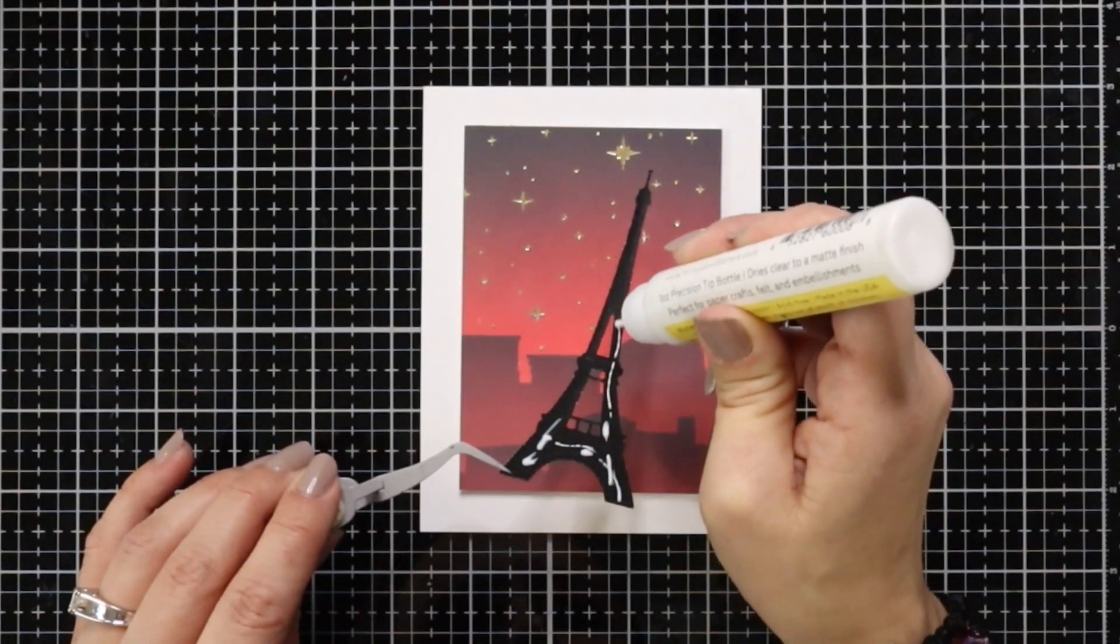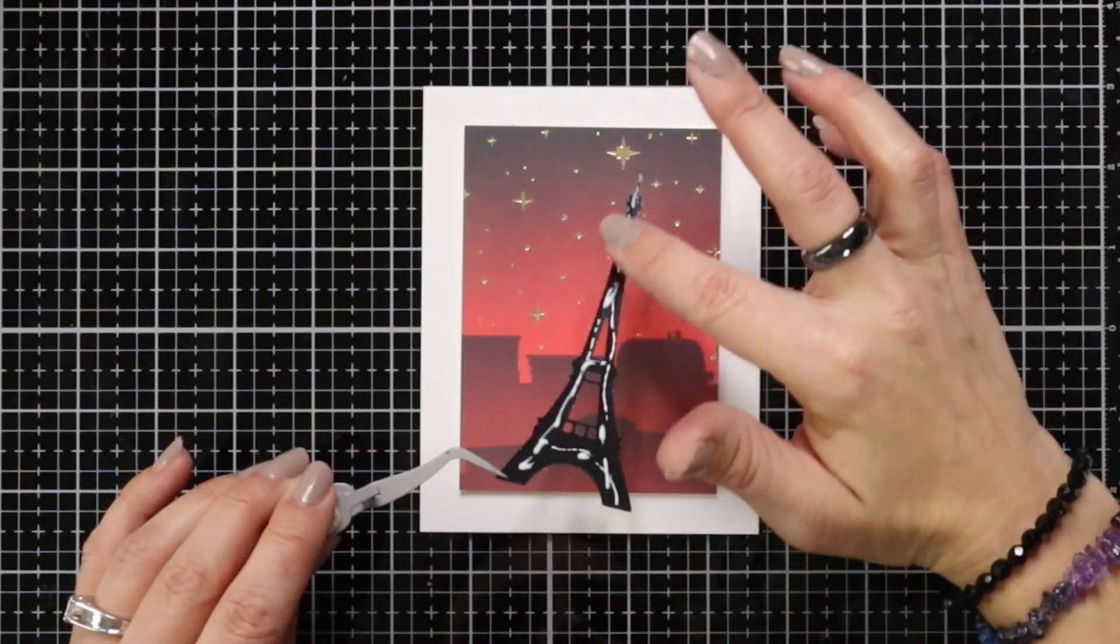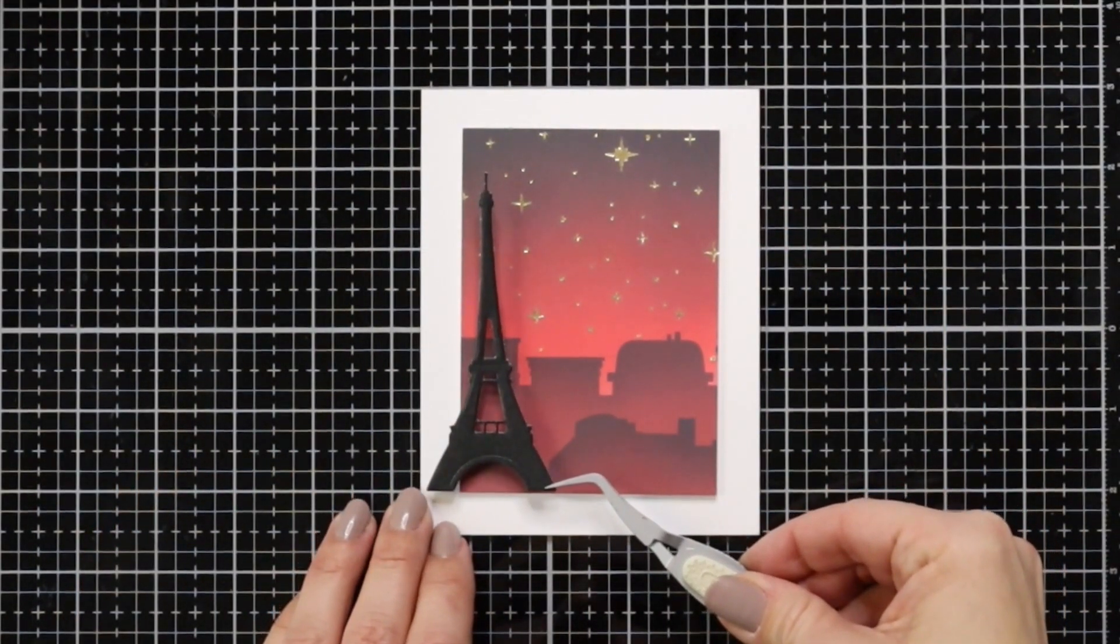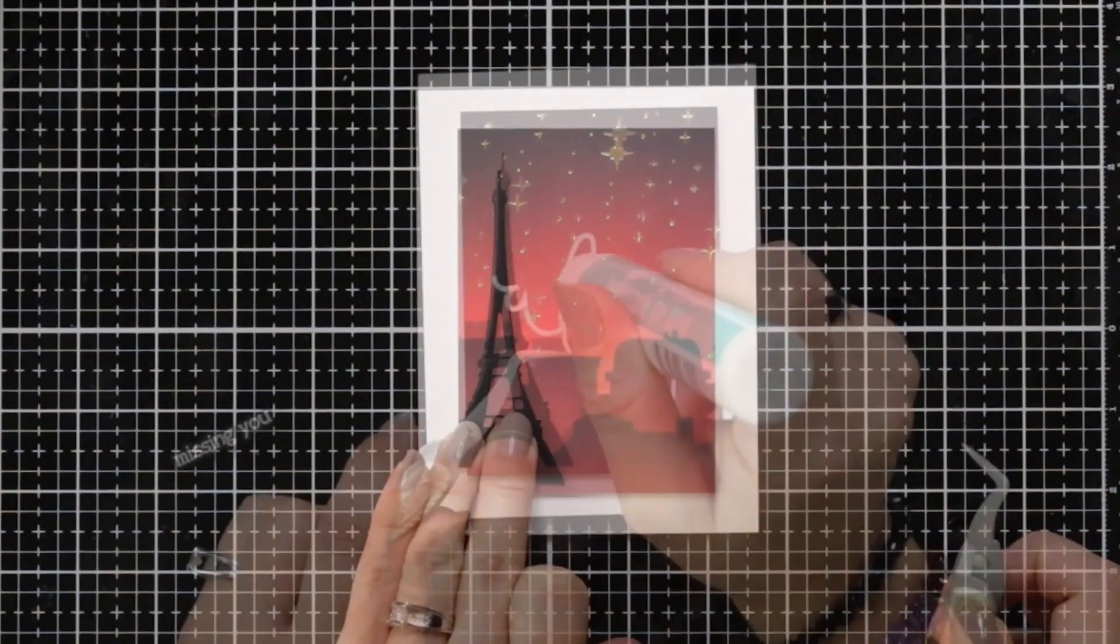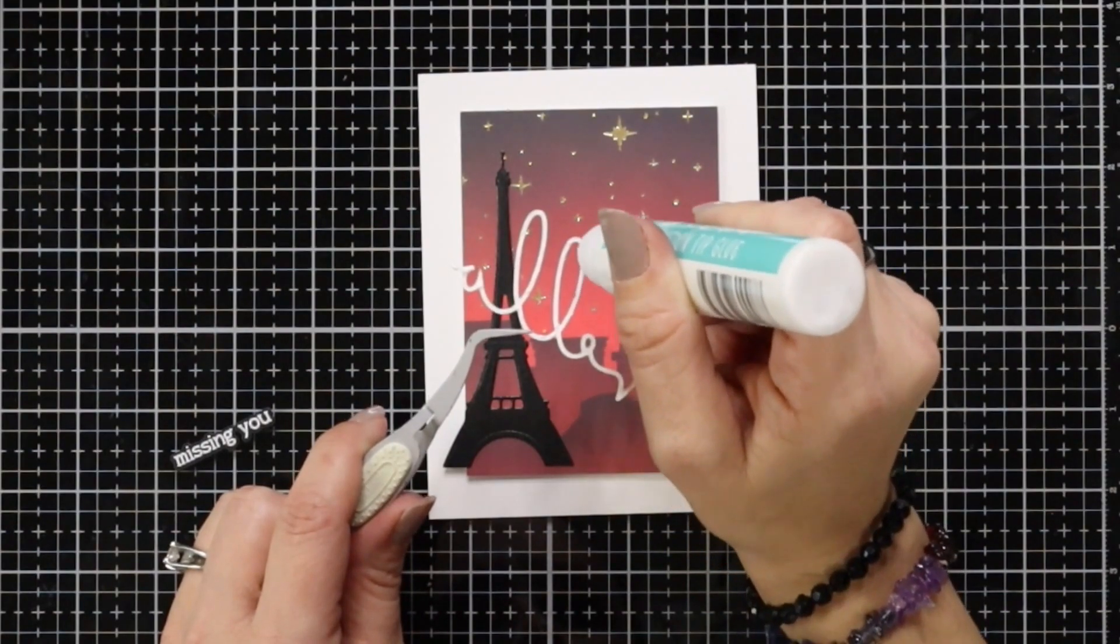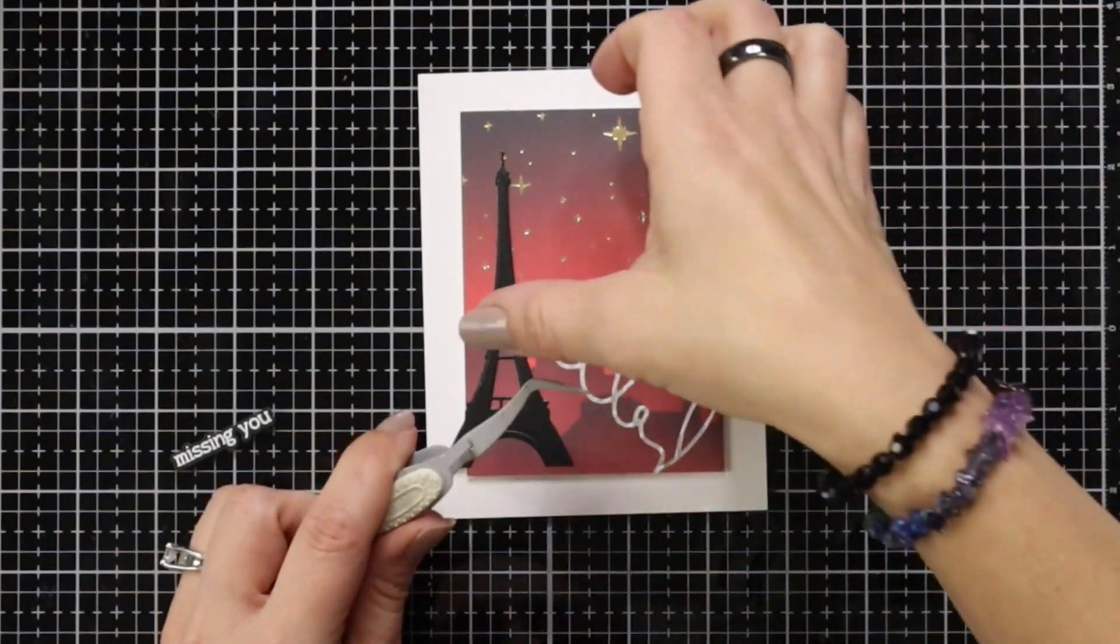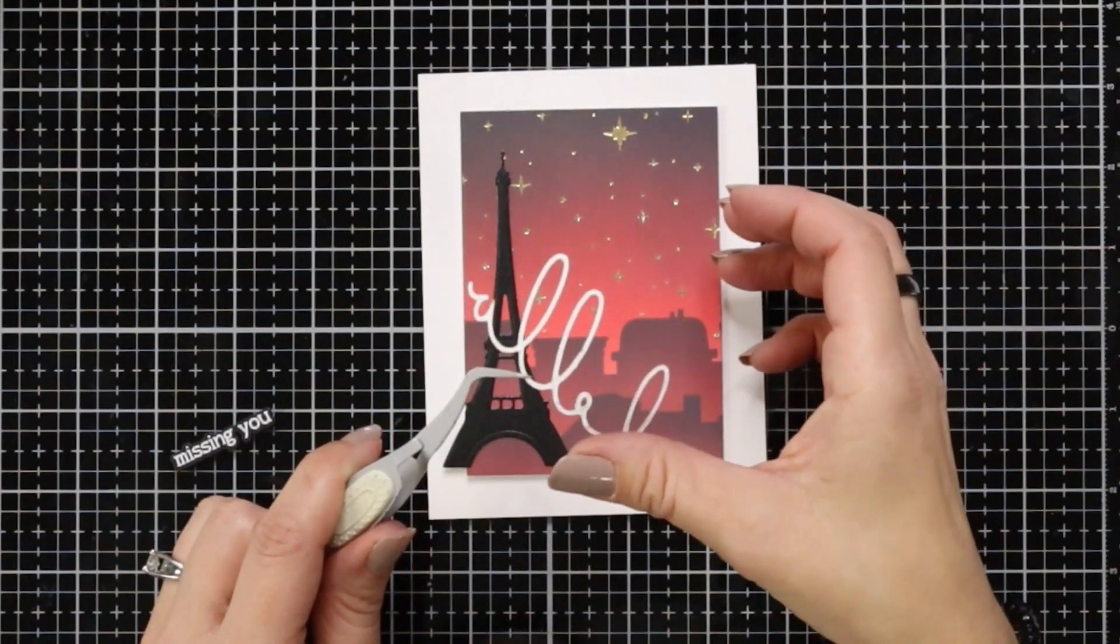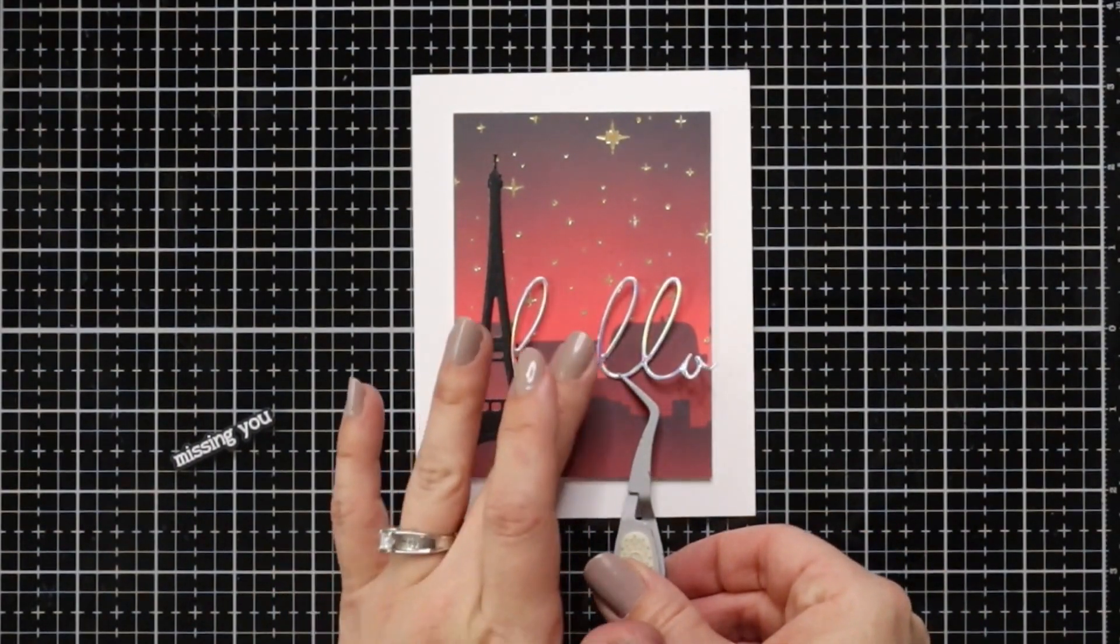I have the Eiffel Tower here from the Paris Skyline die set that I die cut from black pearlescent cardstock and I added liquid glue and I'm just I had a little bit too much liquid glue so I just took my finger and kind of smeared off any extra. I didn't want it seeping out outside of my die because distress oxide inks are reactive to water or any type of liquid so I was being very careful with that. This is the hello that I die cut from holographic cardstock and this is off of the slimline sentiments die set. I really like how delicate it is and then same thing added it with liquid glue kind of dapped off any excess and attaching that right to the front of the card.